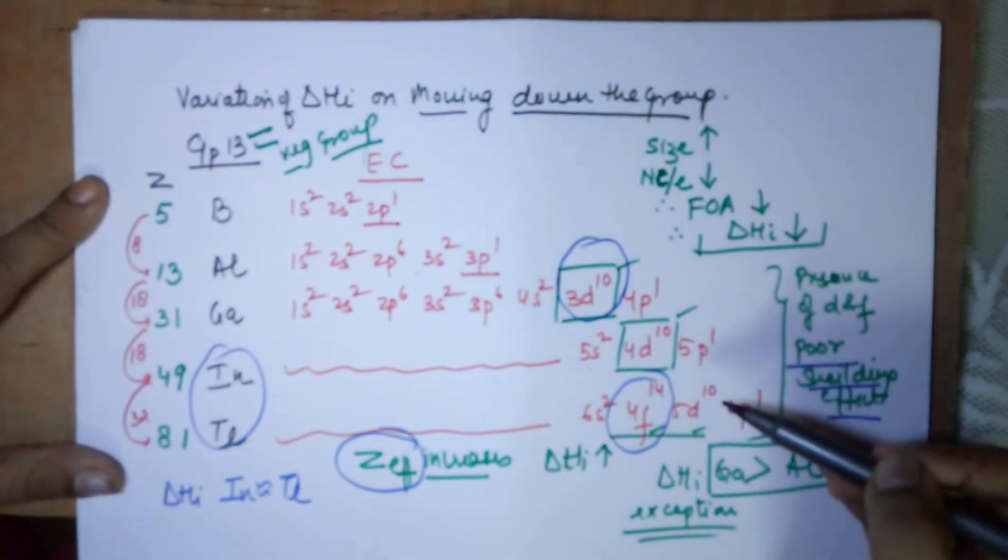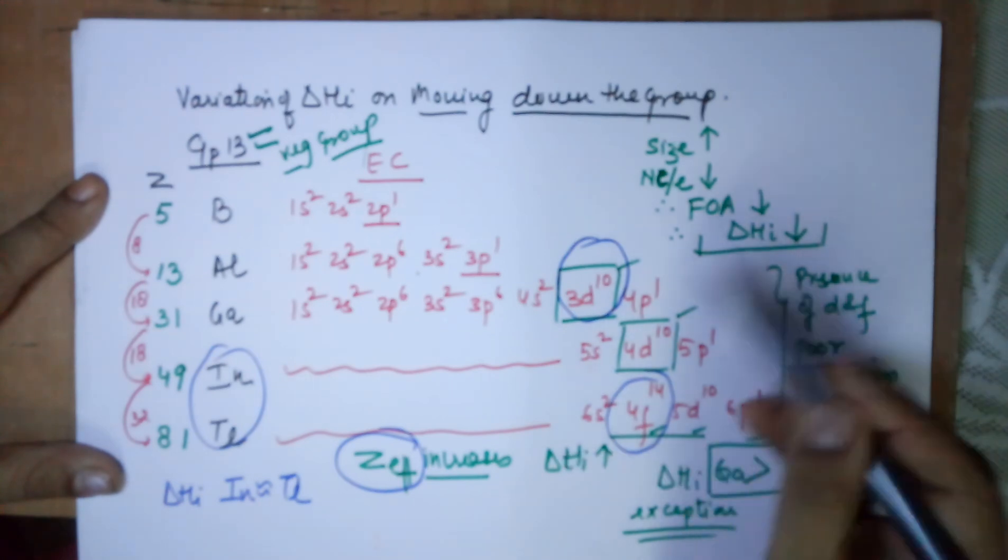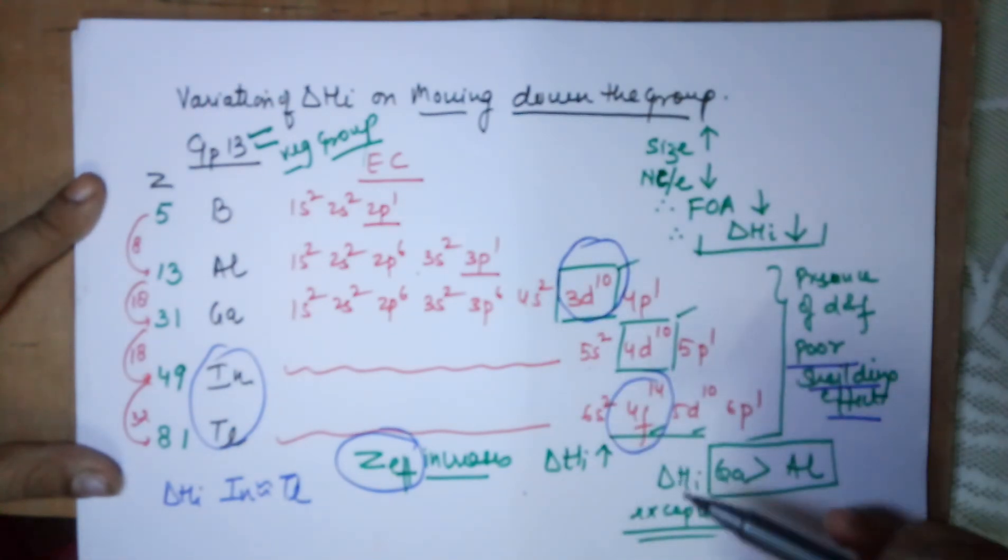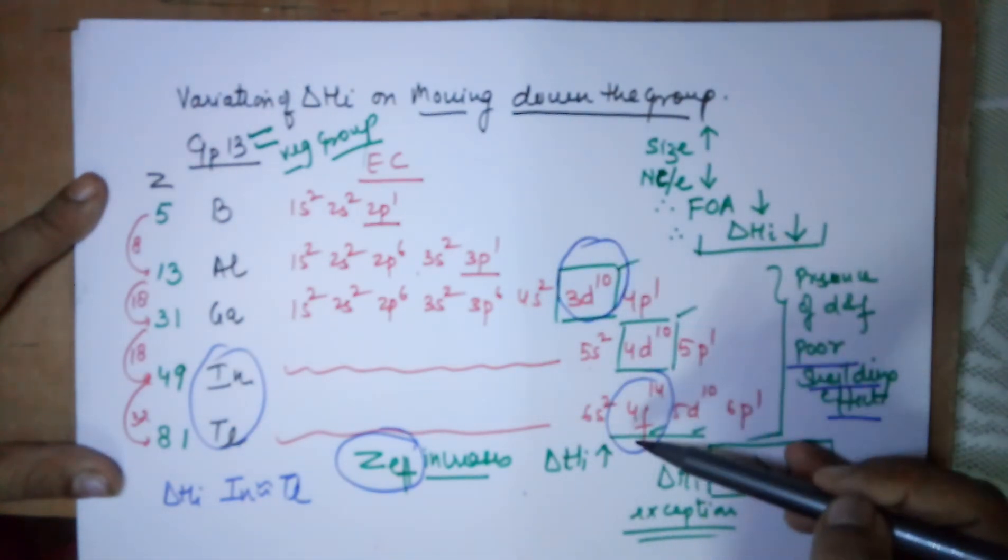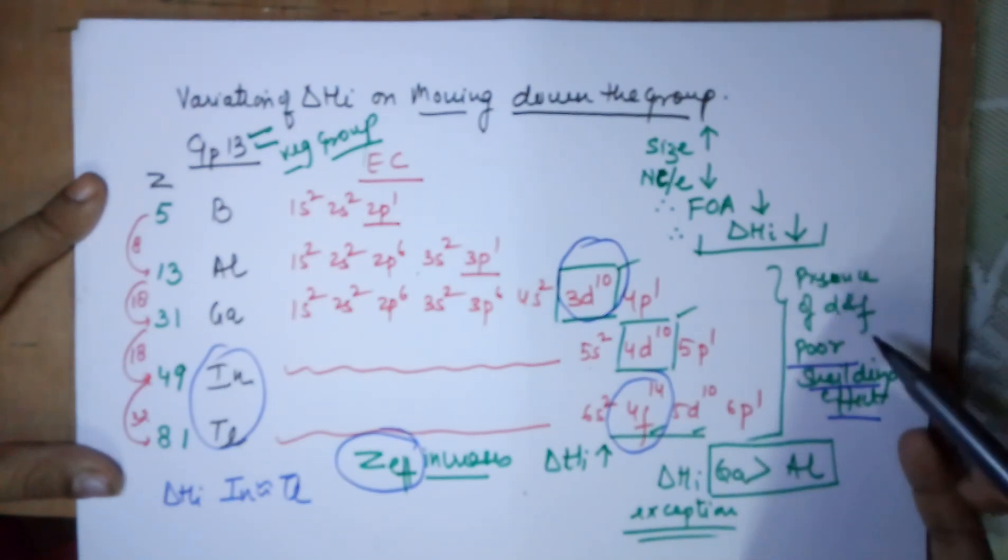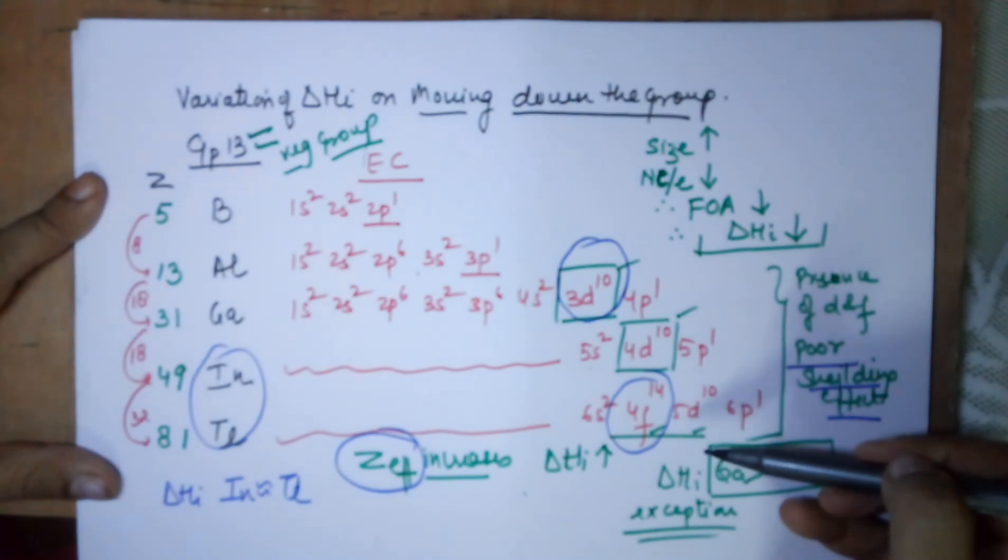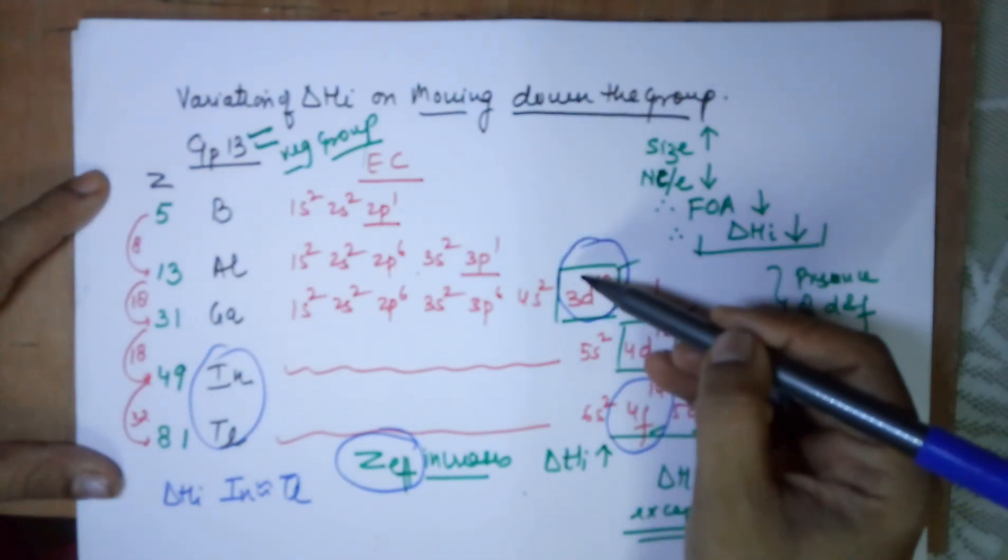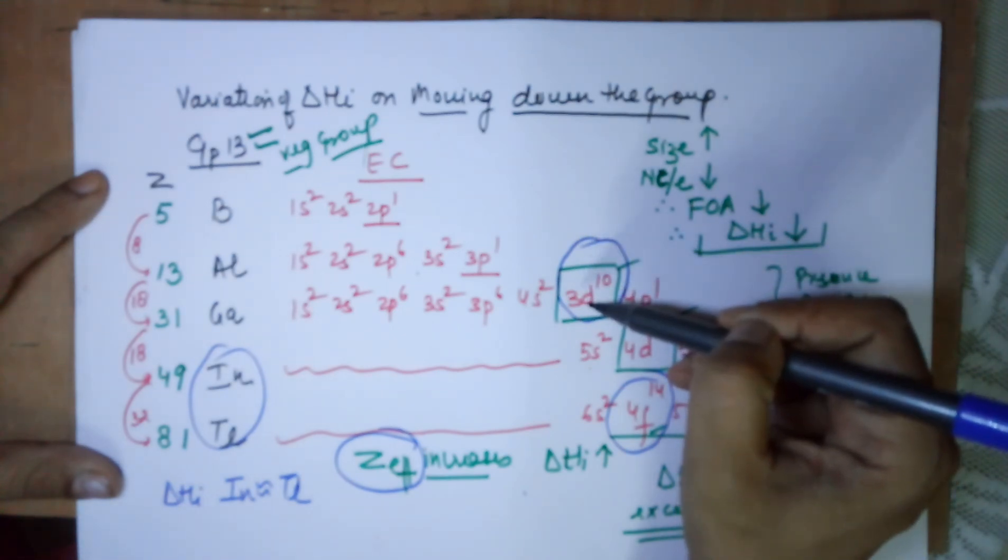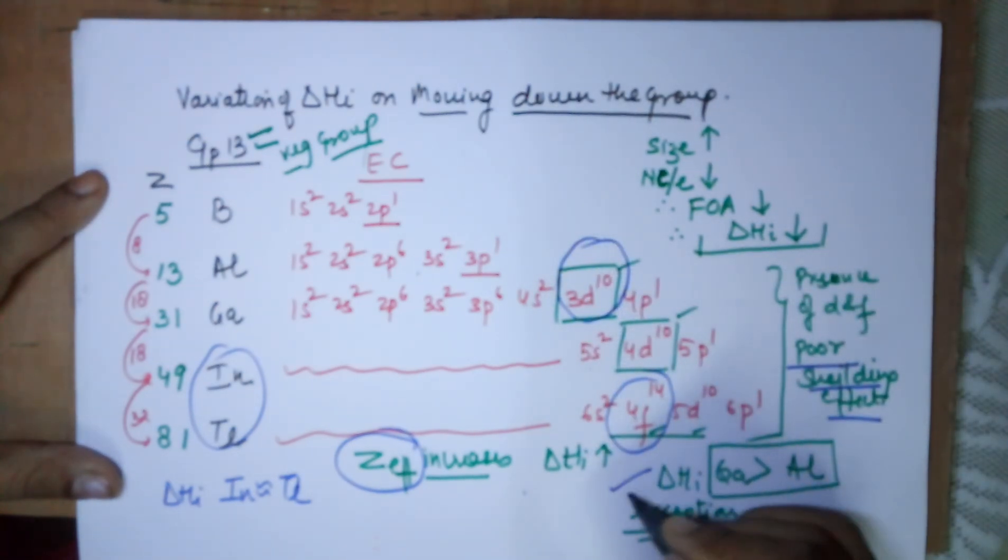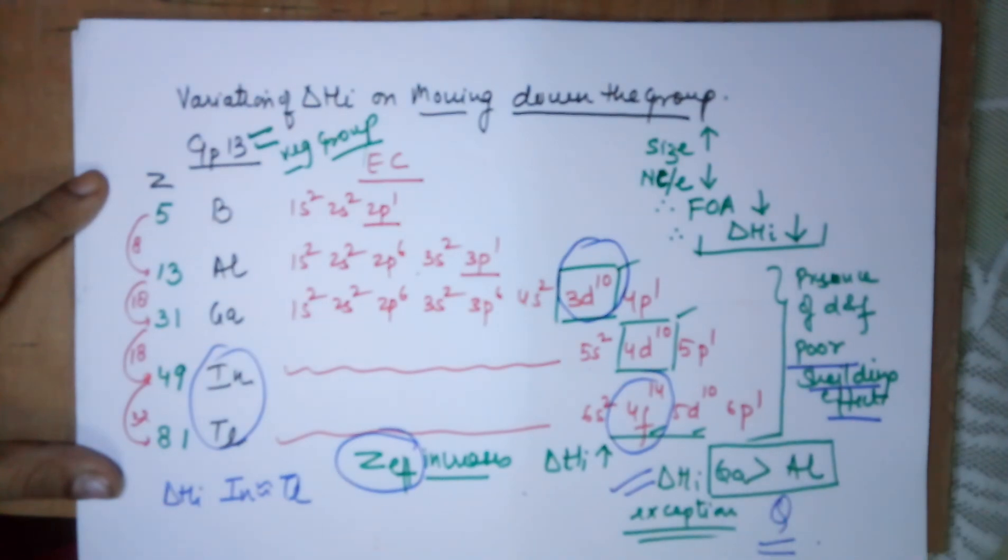So I conclude my class with the statement: down the group, ionization energy should decrease, electron removal should become easy because the atomic radii is increasing. But in the last members, whenever you have a d or an f incorporated, it leads to a poorer shielding effect which causes the effective nuclear charge to increase. Hence the decrease in ionization energy is very very less. Also in group 13 we in fact find a slight increase in ionization energy on moving towards gallium in comparison to aluminum, which is an exception and a commonly asked question. With this I end my class. Have a good day, thank you.